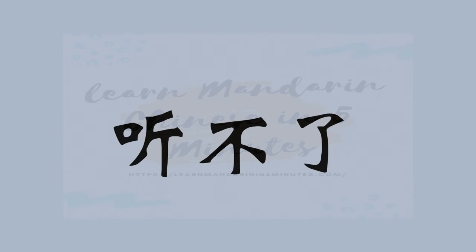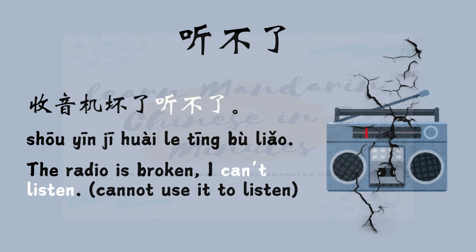听不了 is used in Chinese to express the inability to listen because of some issue. For example, 收音机坏了，听不了 — The radio is broken, I cannot listen — meaning you cannot use the radio to listen. Take note that the character 了 in 听不了 should be pronounced as liǎo and not le. It is wrong to say 听不了 with the le pronunciation.